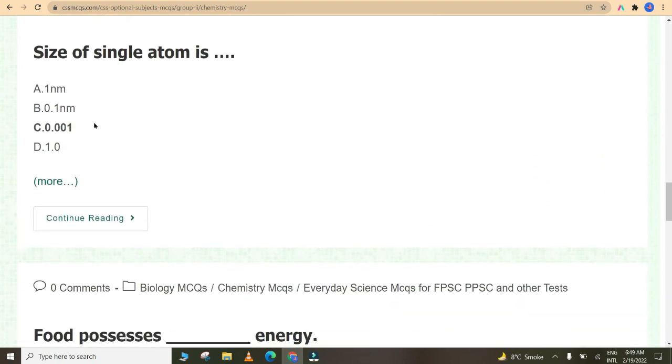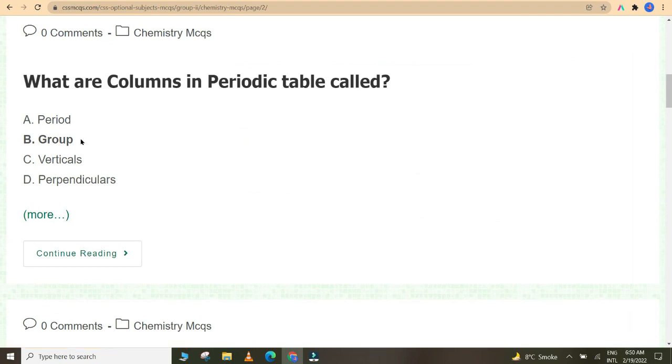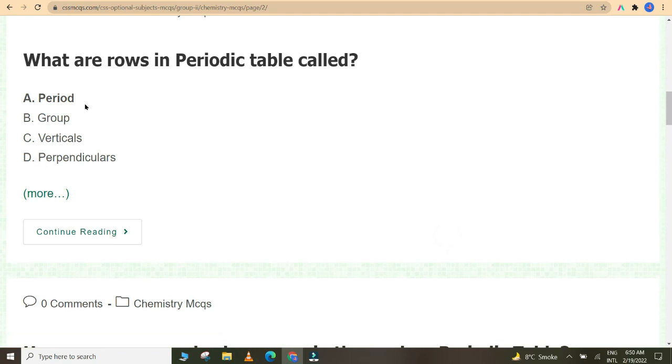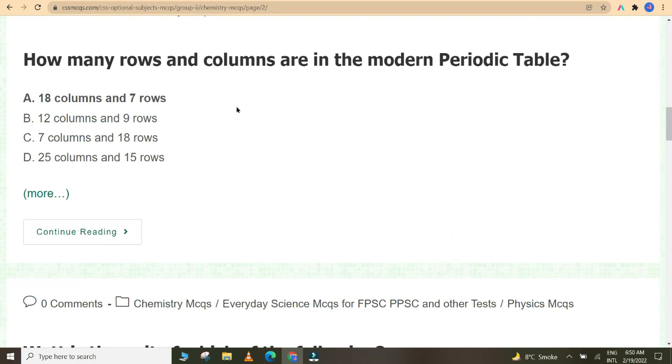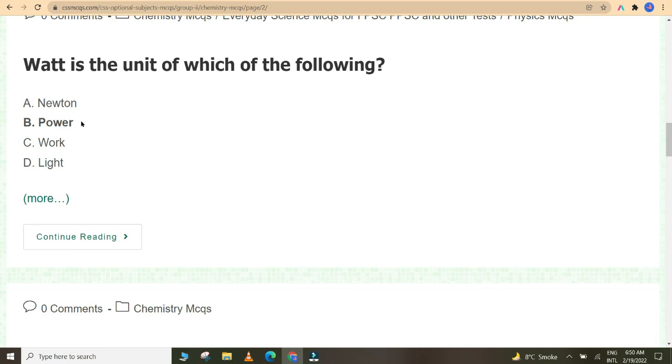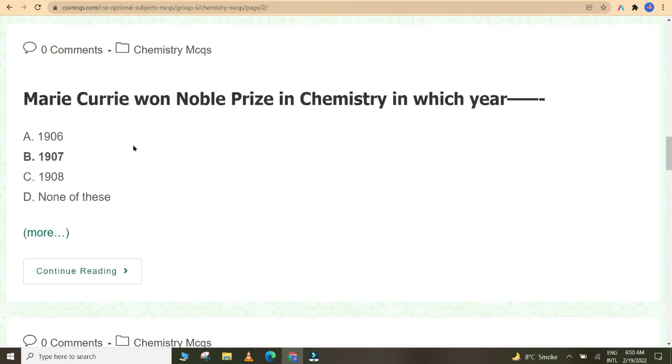Total number of protons in atom of each element is called its atomic number. Size of single atom is 0.001 nanometer. Food possesses chemical energy. What are columns in periodic table called? Group. What are rows in periodic table called? Period. How many rows and columns are there in the modern periodic table? 18 columns and 7 rows. What is the unit of power? Watt. Marie Curie won Nobel Prize in Chemistry in 1911. The electrode through which the electron enters the electrolytic solution is cathode.